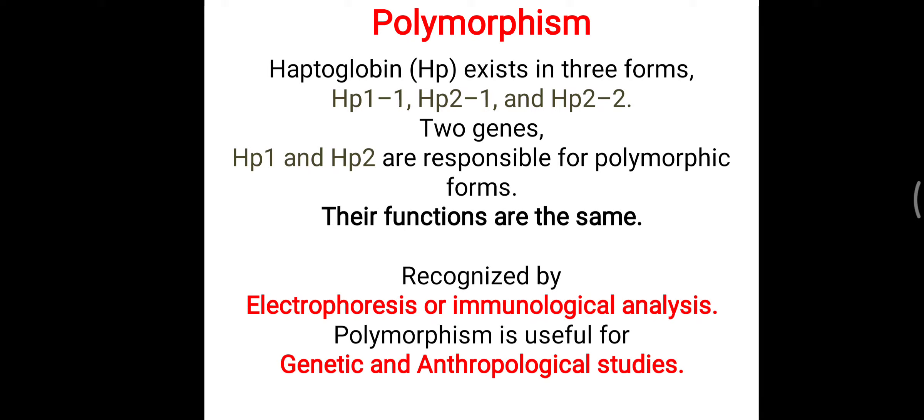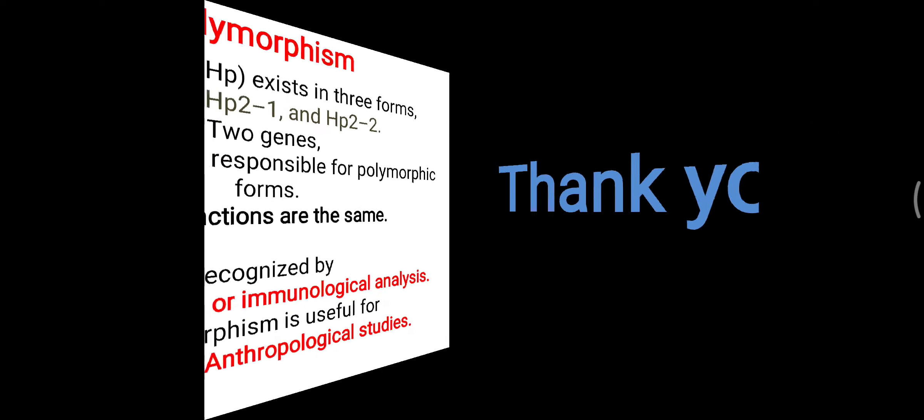Polymorphism is useful to understand genetic makeup and genetic differences in a population, as well as for anthropological studies. Simply remember: different phenotypical presentation of a protein but the same function — that is called polymorphism.